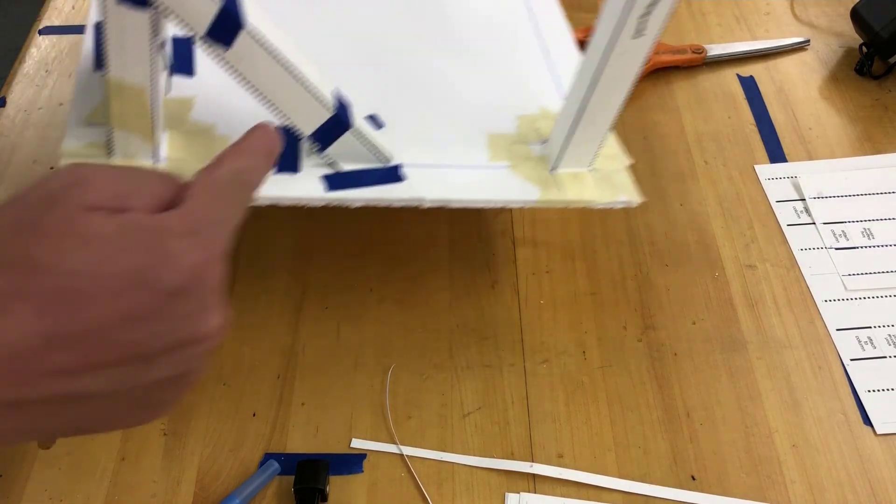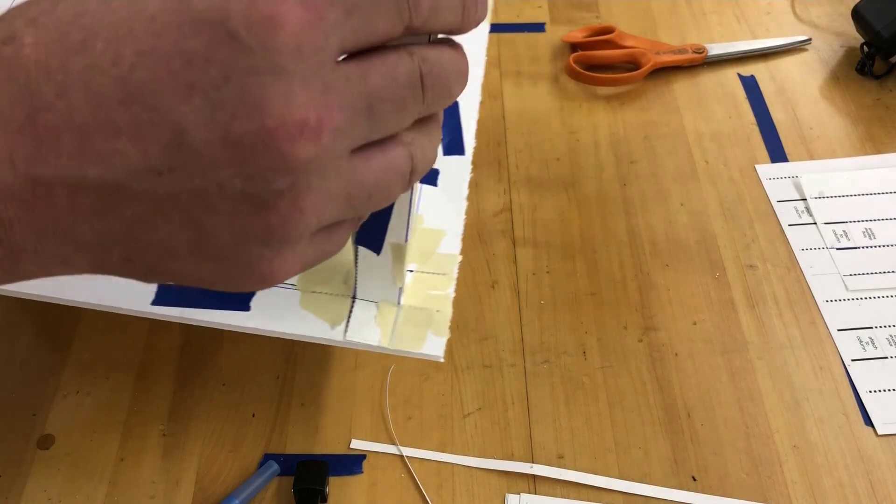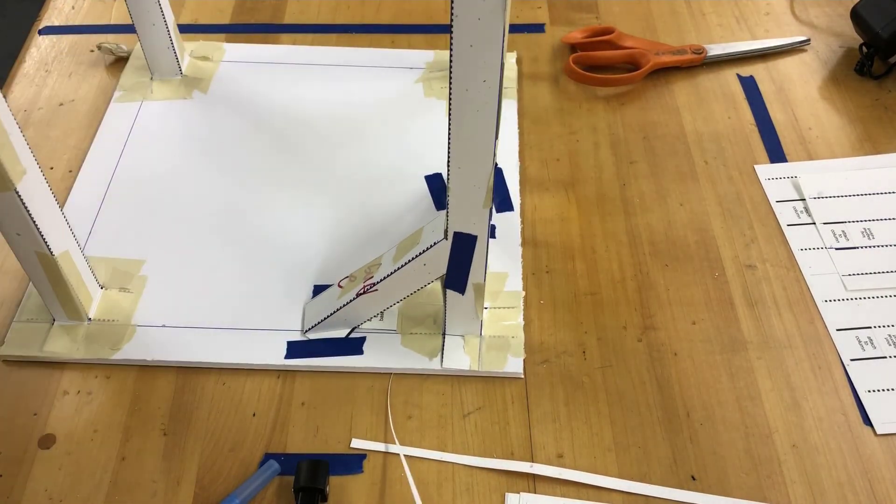So you should put a long one and a short one on each side, all four. That's gonna make this really sturdy.